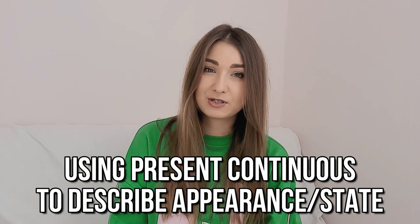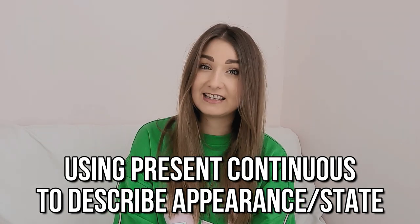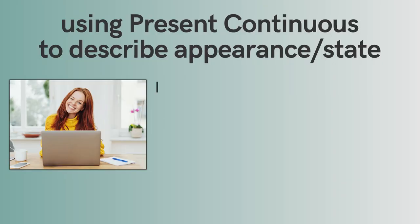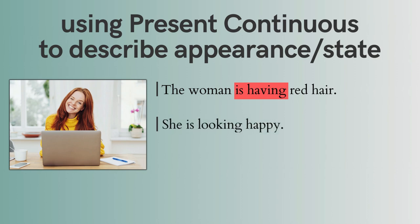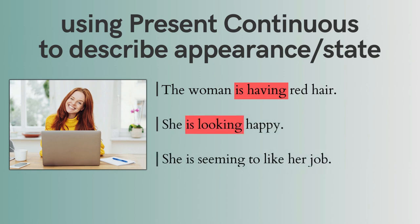But the present continuous tense is not the only tense you can use while describing a photograph. Unfortunately, some students make mistake number three, which is using the present continuous tense to describe someone's appearance or to describe a state. Incorrect: The woman is having red hair. She is looking happy. She is seeming to like her job.